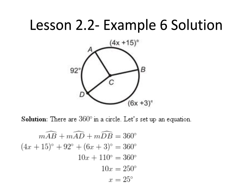We can then write the equation: the measure of arc AB plus the measure of arc AD plus the measure of arc DB equals 360 degrees.